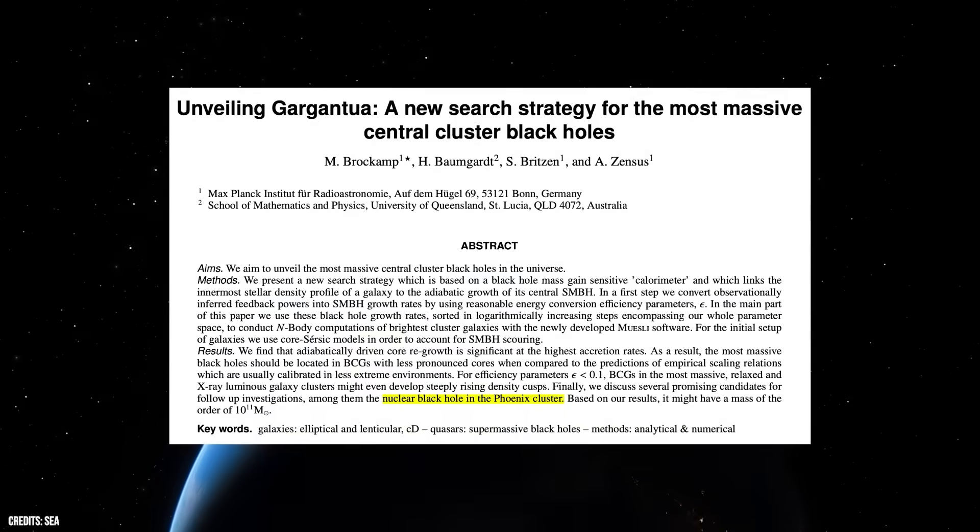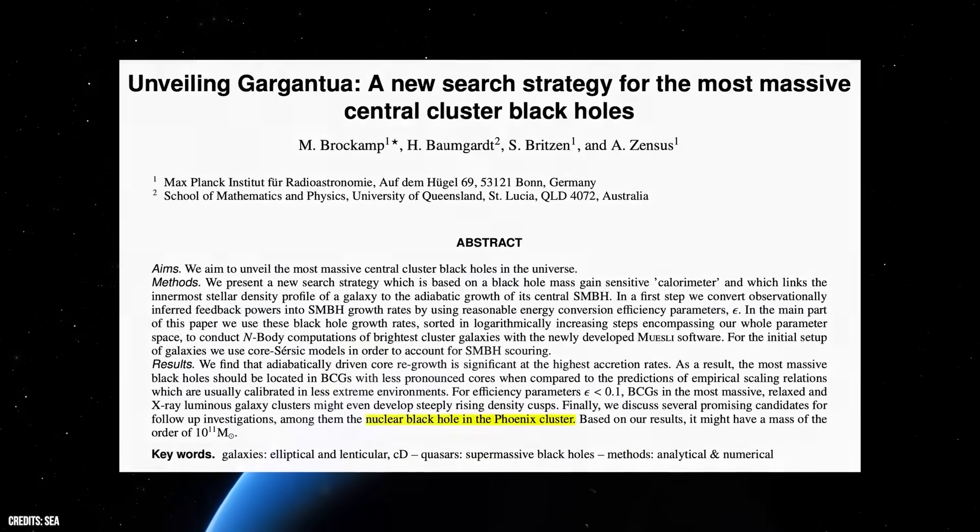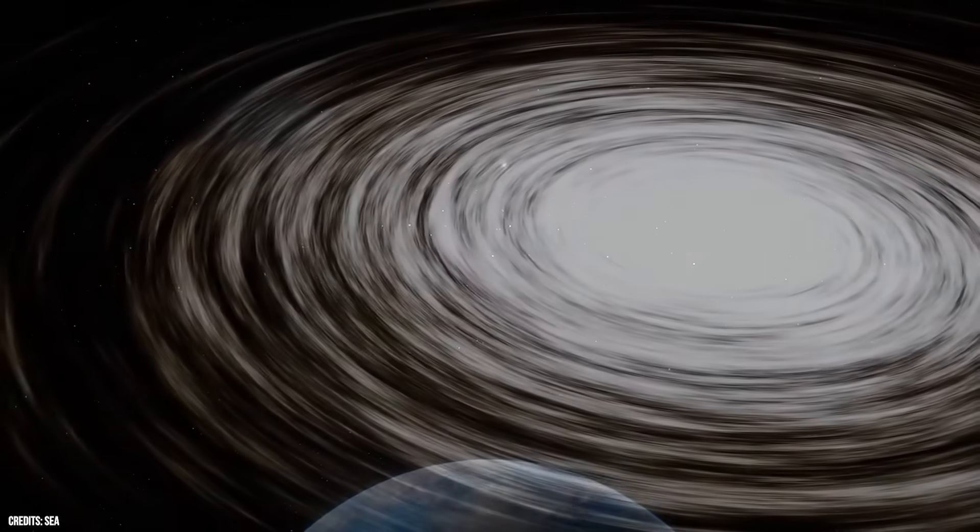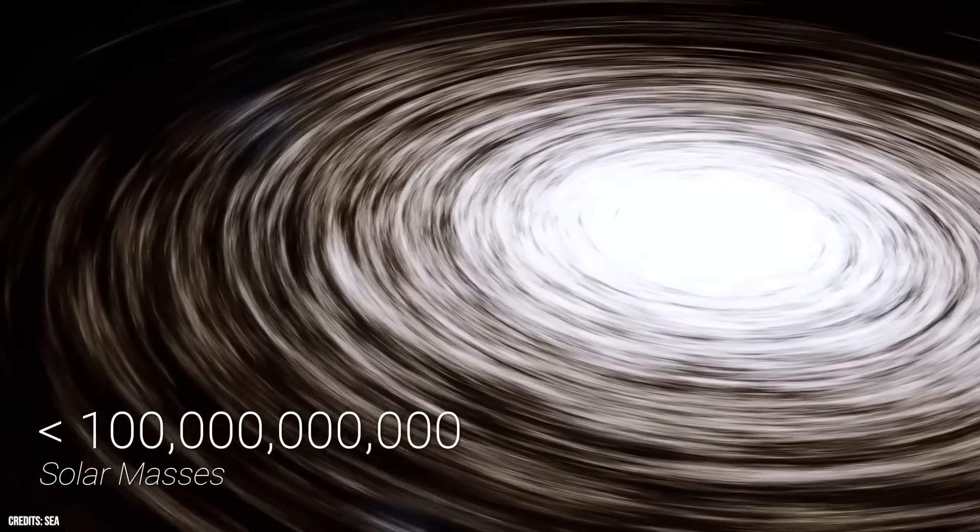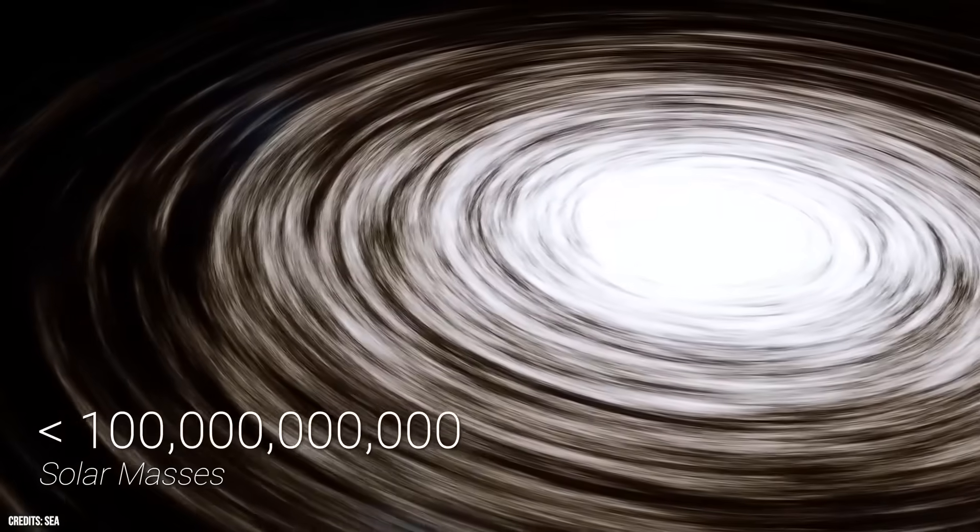Regarding the size of black holes, Roger Penrose suggests that the size of a black hole is typically described by its event horizon, which is determined by its mass. The larger the mass of a black hole, the larger its event horizon will be.